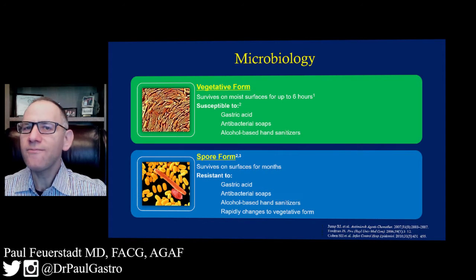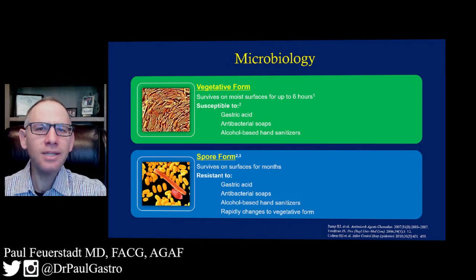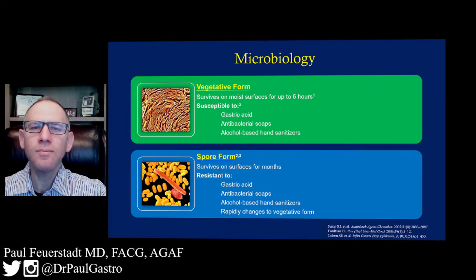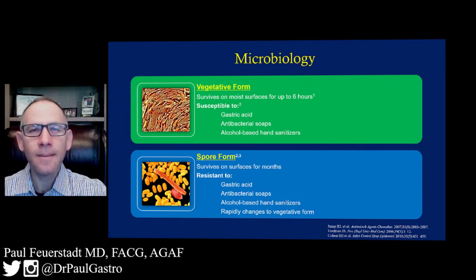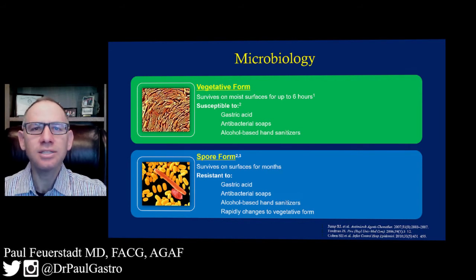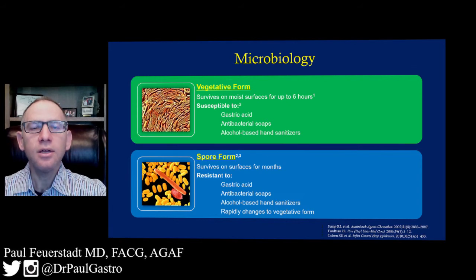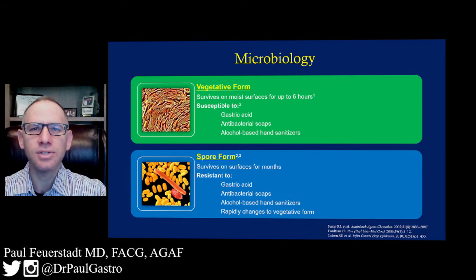There are two main phases of C. difficile infection: the spore phase and the vegetative phase. As a patient, you most commonly think about the vegetative phase, because this is the phase that causes the symptoms most commonly associated with C. difficile — namely the diarrhea. The vegetative phase is susceptible to gastric acid and to alcohol-based hand sanitizers; if it comes in contact with these things, it gets wiped out. This is in comparison to the much hardier spore phase, which is resistant to gastric acid and alcohol-based hand sanitizers. This phase is the reason why C. difficile spreads so extensively.